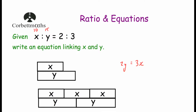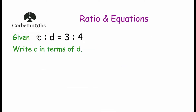Next question: given that the ratio of c to d equals 3 to 4, write c in terms of d. Using our shortcut, take c and multiply by the d number in the ratio — the 4 — giving 4c. Then take d and multiply by the c number in the ratio — the 3 — giving 3d. So the equation is 4c equals 3d.